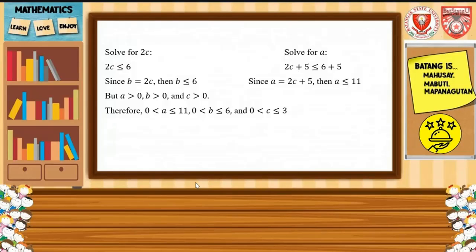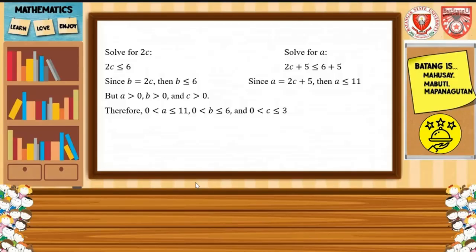Since A, B, and C must all be greater than 0: C is greater than 0 and less than or equal to 3. B is greater than 0 and less than or equal to 6. Since A equals 2C plus 5, and 2C plus 5 is less than or equal to 6 plus 5, then A is less than or equal to 11. Therefore, A is greater than 0 and less than or equal to 11.